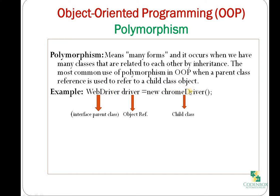WebDriver is an interface class and ChromeDriver is another class. When you create an object of ChromeDriver using the new keyword — new ChromeDriver() — you put it in a variable called 'driver', and on the left side the return type is WebDriver. So the 'driver' variable is a variable of type WebDriver, and it is also an object reference variable for the ChromeDriver object, because driver is pointing to the ChromeDriver class. Driver has knowledge about the WebDriver interface as well as the ChromeDriver object.